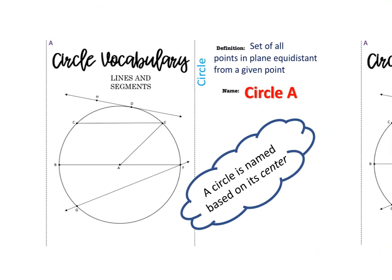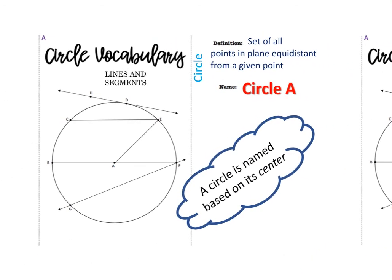The first definition is a circle. A circle is the set of all points in a plane equidistant from a given point. The way we name a circle is based on the center. So looking at this circle, the center is A, and we would call this circle A. We name a circle based on the center.